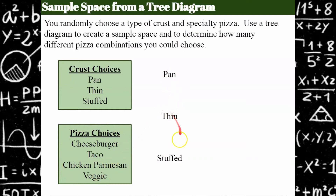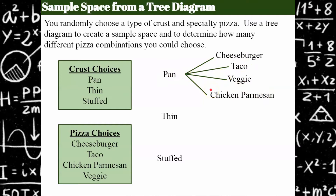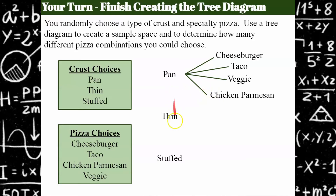After I've selected one of these three types of crust, I have four different pizza choices that I can pick, so we're going to branch those off. I could pick pan and cheeseburger, pan and taco, pan and veggie, and pan and chicken parm. So just with pan pizza there are four different outcomes. Now I'd like you to take a turn at finishing this tree diagram, so please pause and see if you can finish it.